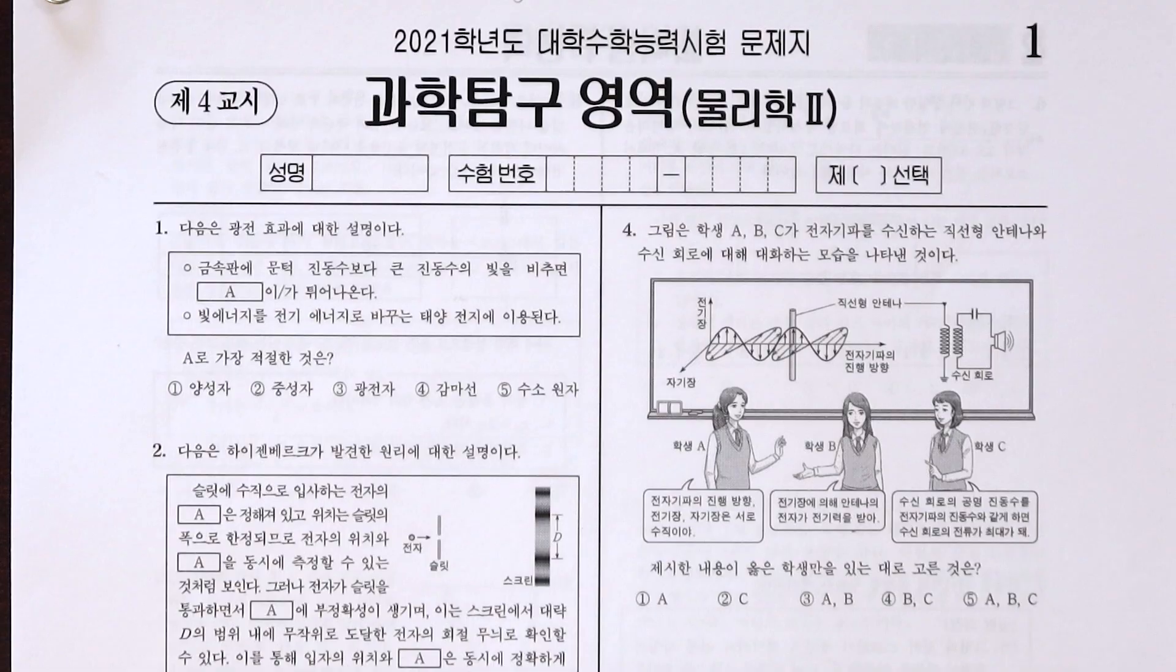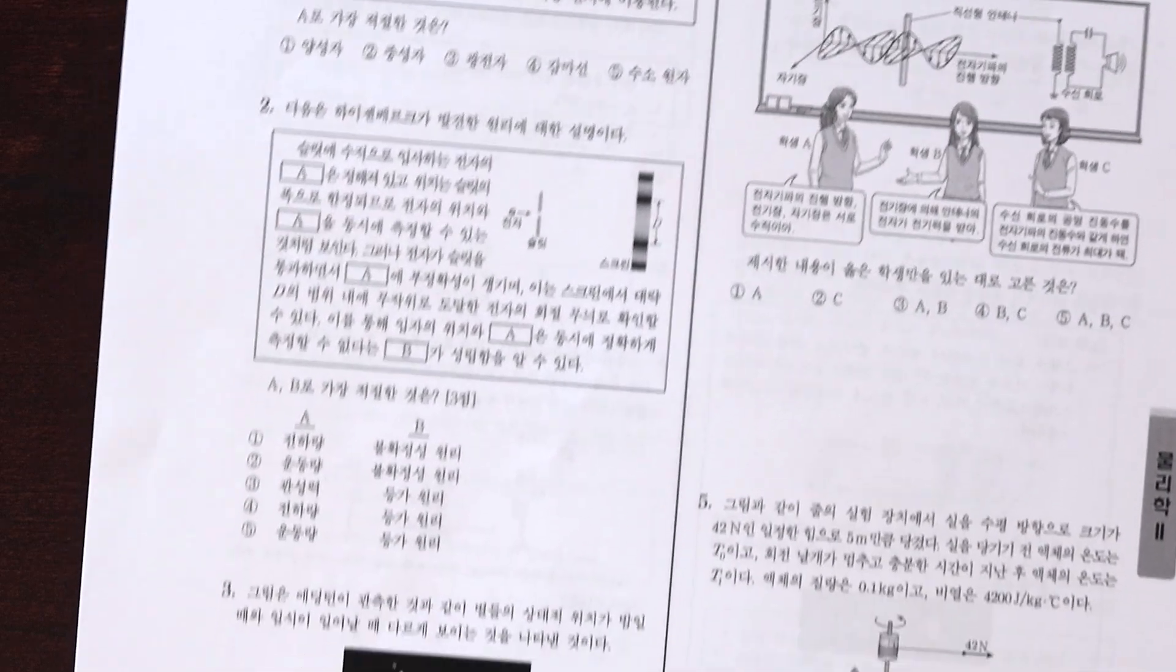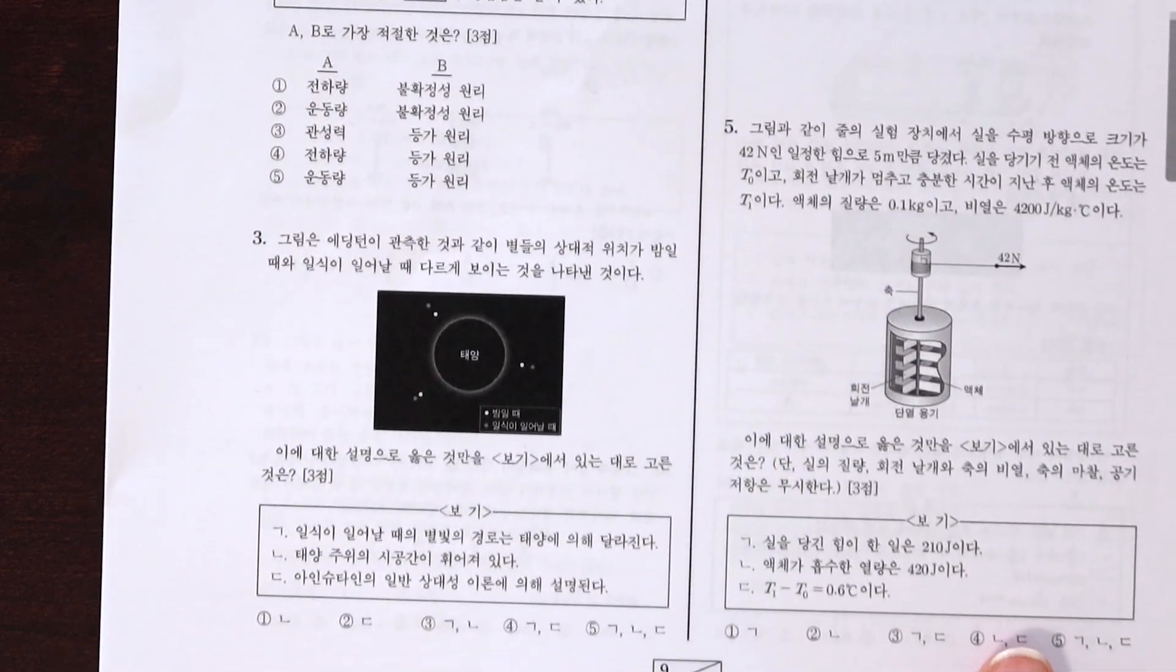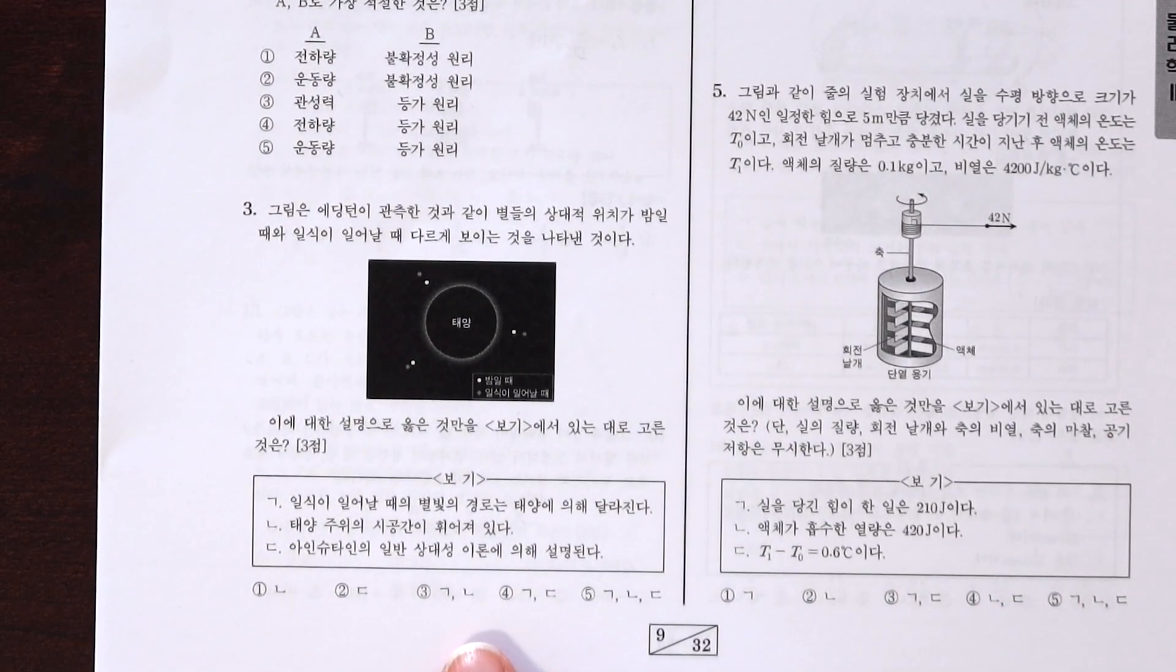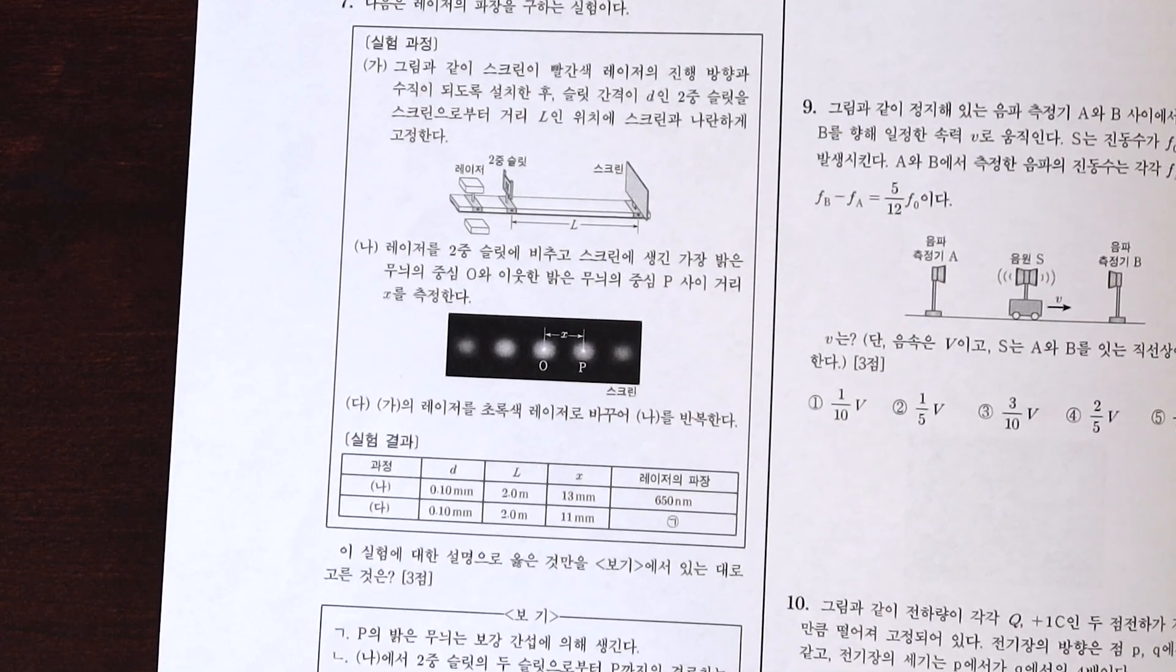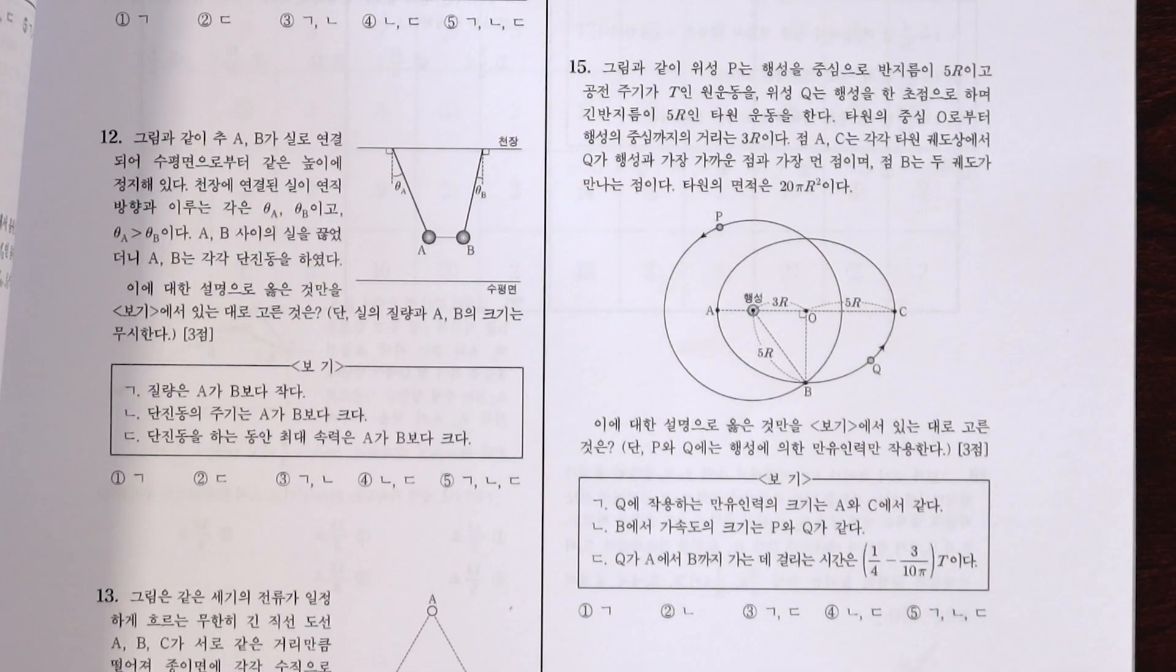The physics paper contains all the usual suspects, but seems mostly based on conceptual understanding rather than heavy calculations, understanding an eclipse, how to determine the wavelength of a laser, and orbital mechanics.